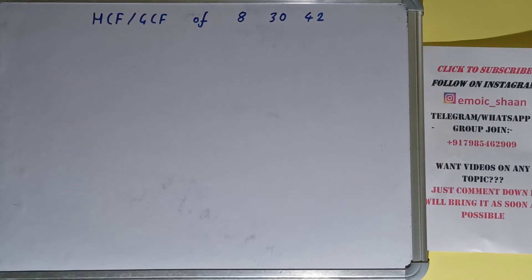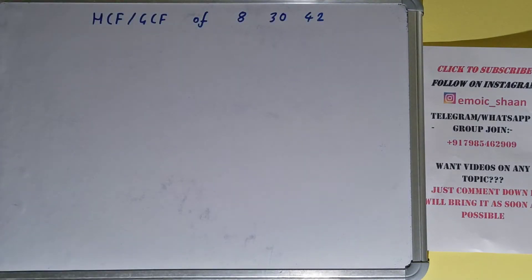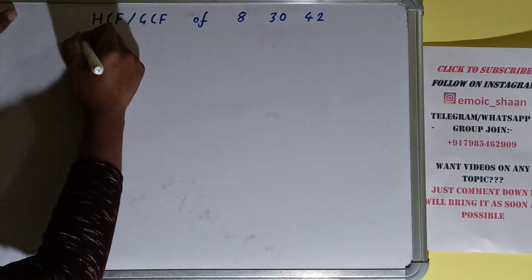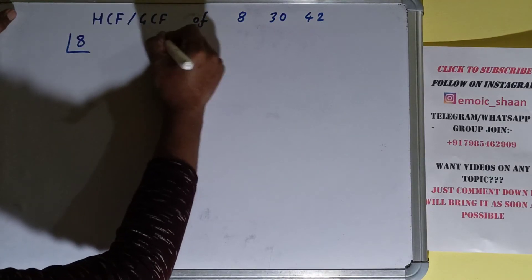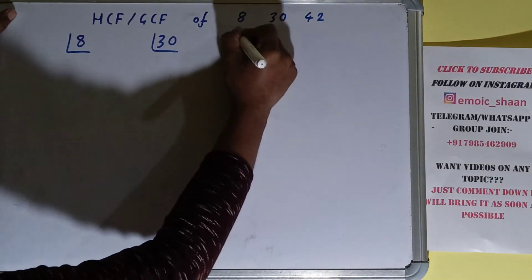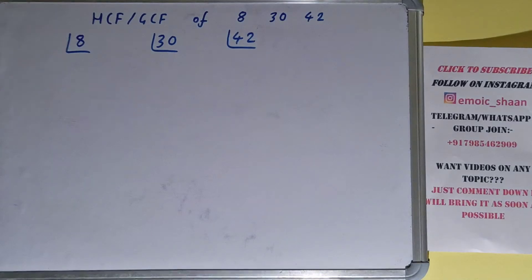Hello friends, and in this video I'll be helping you with the HCF or the GCF of the numbers 8, 30, and 42. So let's start. To find it out, we first need to write each of the numbers separately and prime factorize each of them.